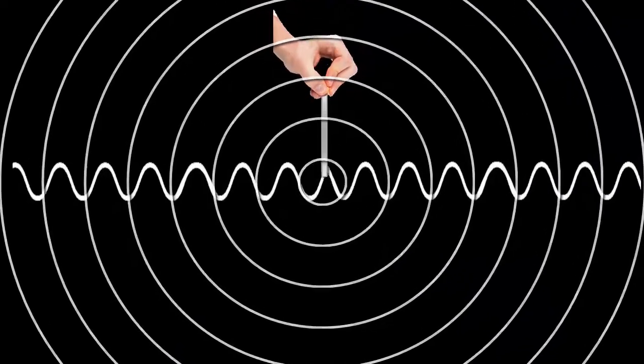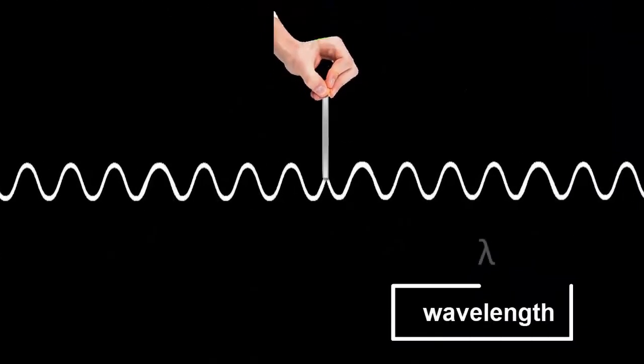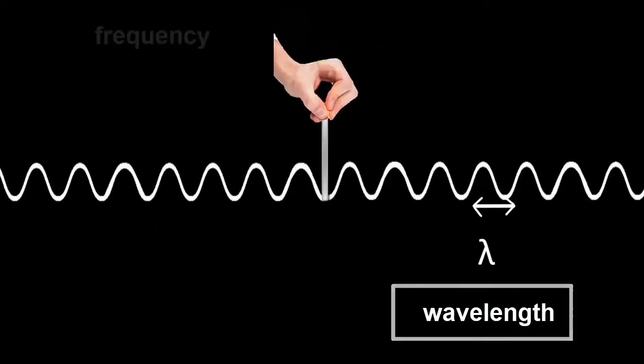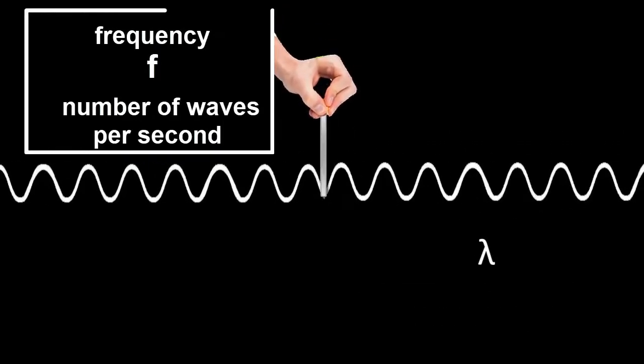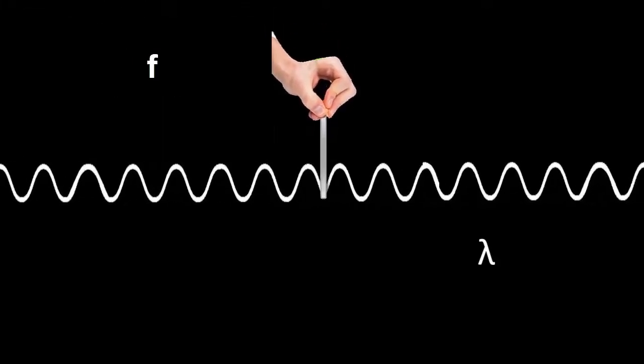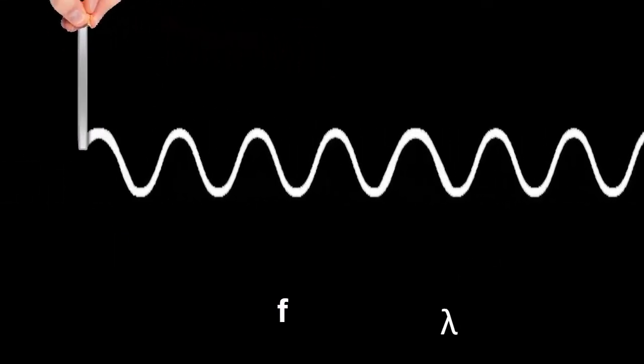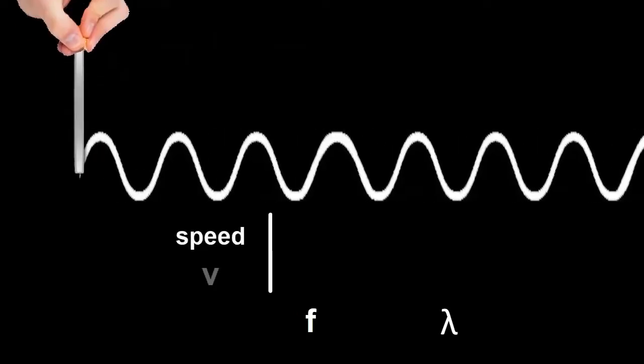The previous video showed how the wavelength lambda, which is the distance between crests, the frequency f, which is the number of waves per second, and the speed v are all connected through the wave equation.